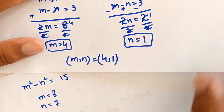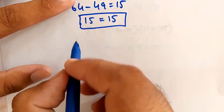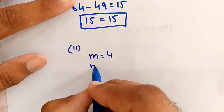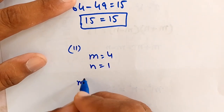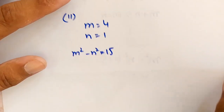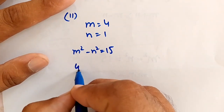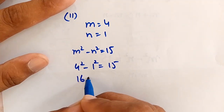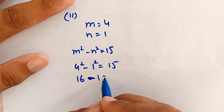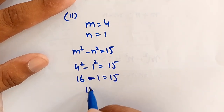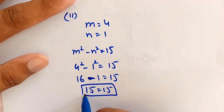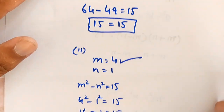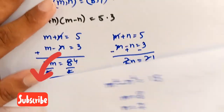For Case 2, m=4 and n=1: m squared minus n squared = 4 squared minus 1 squared = 16 minus 1 = 15, which equals 15. This confirms that (m, n) = (4, 1) is also correct. Thank you for watching, please subscribe to the channel.